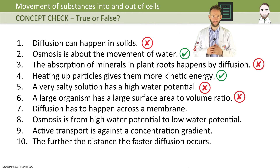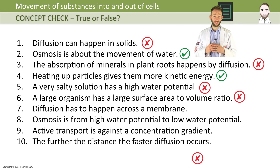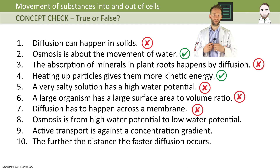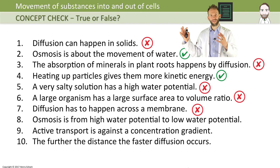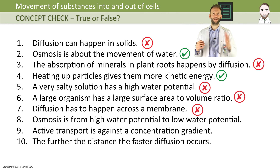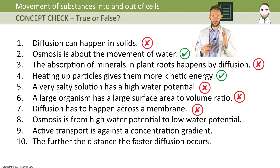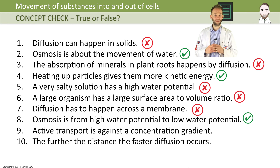Diffusion has to happen across a membrane — that is false. Diffusion can just happen in the air: when somebody sprays perfume, if you're close you smell it first, and somebody further away it takes longer. The molecules are diffusing without crossing a membrane. It is only in osmosis that a membrane has to be involved. Osmosis is from high water potential to low water potential — that is true.